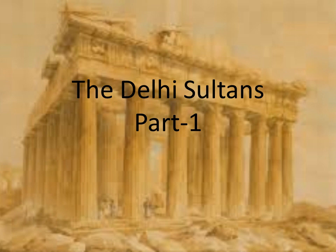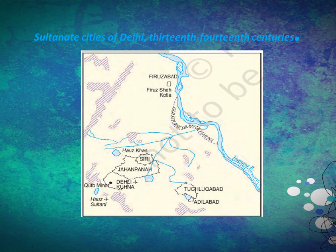The Delhi Sultans. In the map of Delhi, we can see the Sultanate cities in the 13th and 14th centuries like Firozabad, Firoz Shah Kotla, Tughlaqabad, Adilabad, Hojkhaz, Siri, and Jahampana.